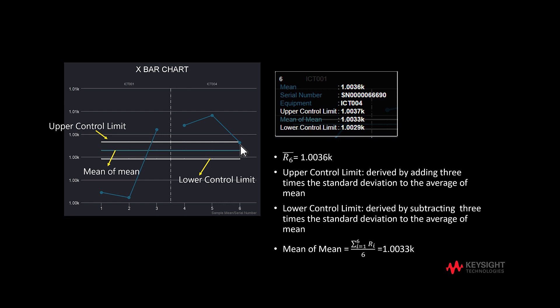In this case, we can see all points are outside the control limits, and the part-to-part variation is minimal for ICT004 compared to ICT001.